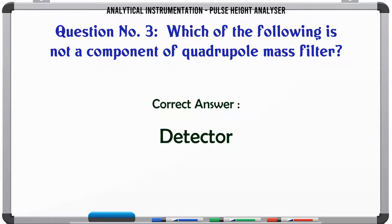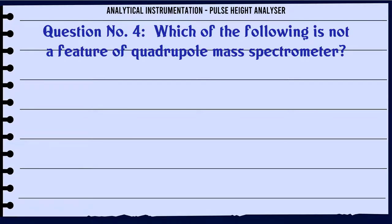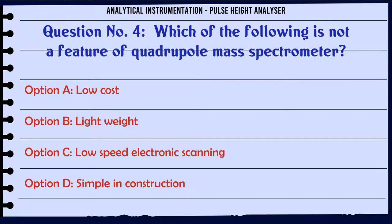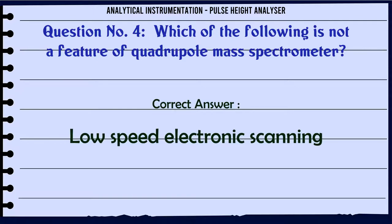Detector. Which of the following is not a feature of quadrupole mass spectrometer? A. Low cost. B. Lightweight. C. Low speed electronic scanning. D. Simple in construction. The correct answer is: Low speed electronic scanning.